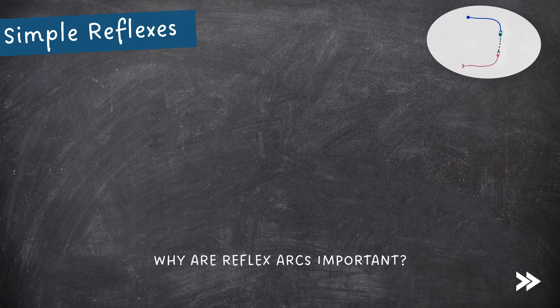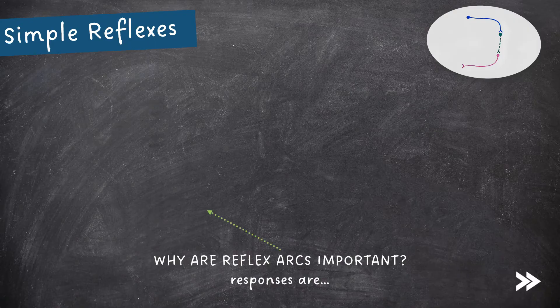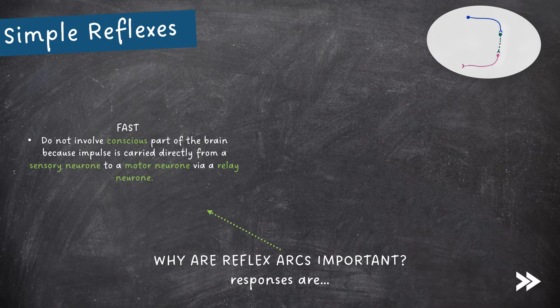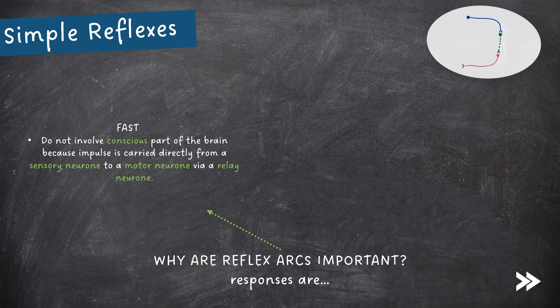So, why are reflex arcs so important? First of all, they result in fast responses. And this is because they do not involve the conscious part of the brain, because the impulse is carried directly from a sensory neuron to a motor neuron via a relay neuron. Responses are fast also because impulses travel fast along neurons.